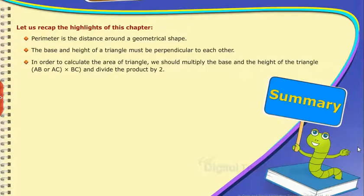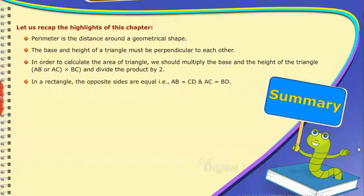In order to calculate the area of a triangle, we should multiply the base and the height of the triangle, AB or AC, into BC and divide the product by 2. In a rectangle, the opposite sides are equal.